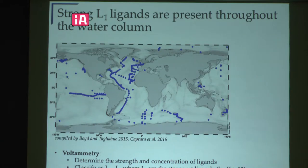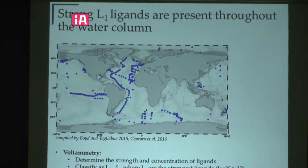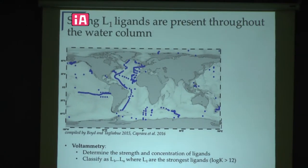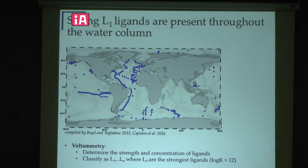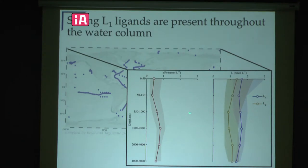When I show that map and say we have measurements of ligands, I'm referring to measurements called voltammetry, or electrochemistry. These measurements determine the concentration and the strength of these organic compounds, and they're generally represented by classes of ligands based on their binding strength — L1 through however many classes. We generally see two or three classes depending on the analytical methods, but in these methods we don't know what the compounds are.